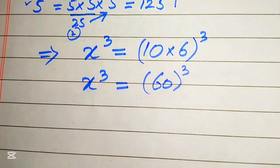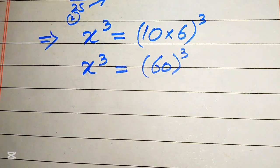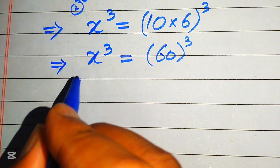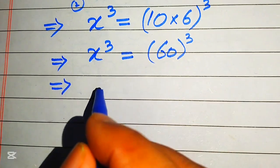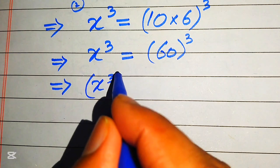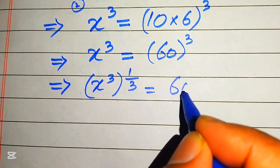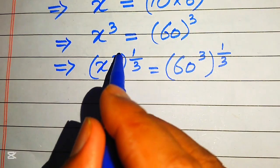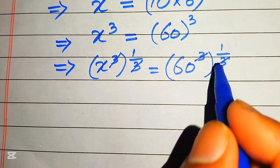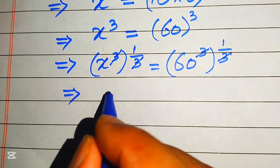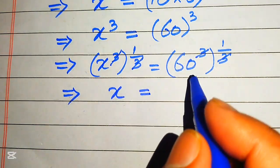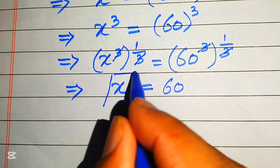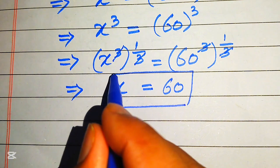To remove the cube sign, we take the cube root on both sides. Taking the cube root: x cubed to the power of one-third on the left, and 60 cubed to the power of one-third on the right. The cube and cube root cancel on both sides, leaving x equals 60. This is the final value of x.